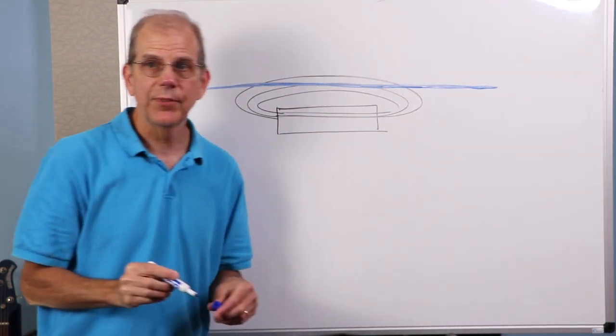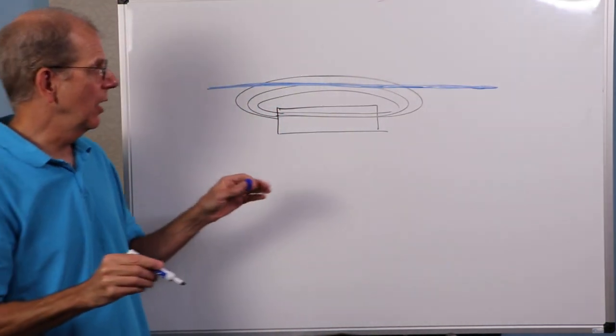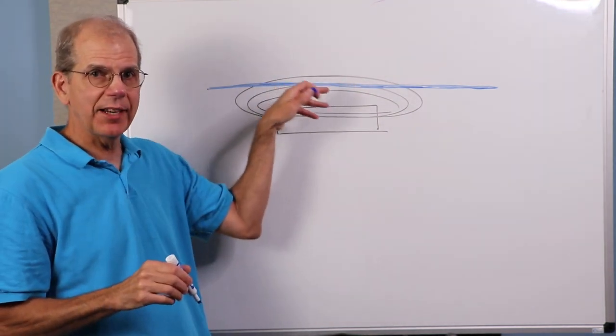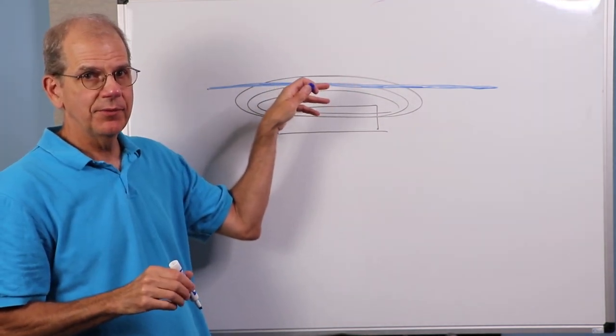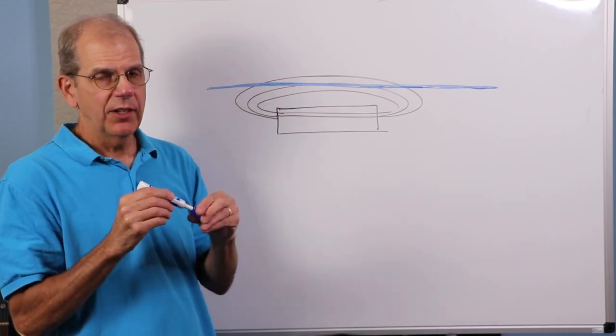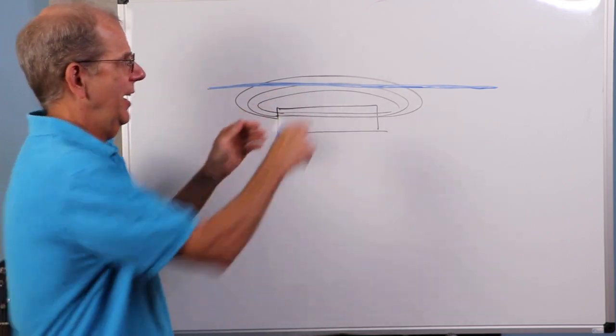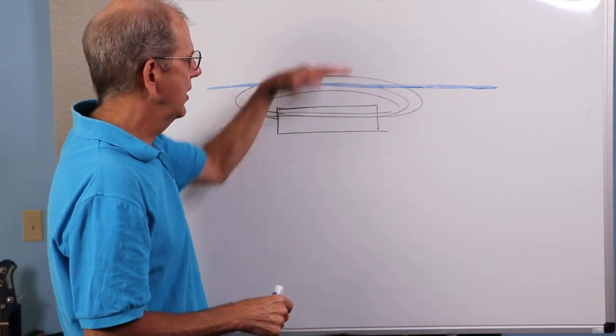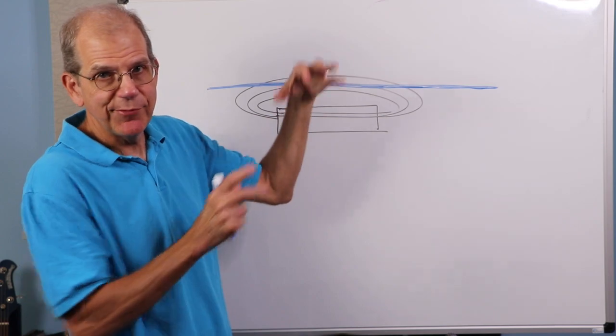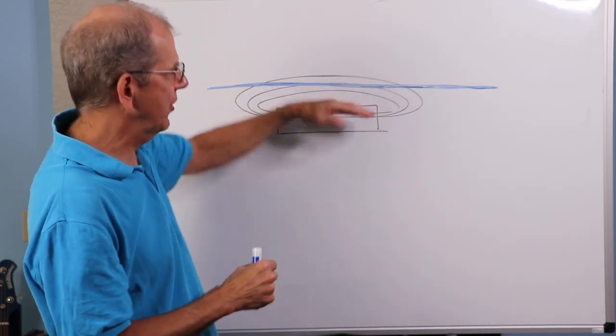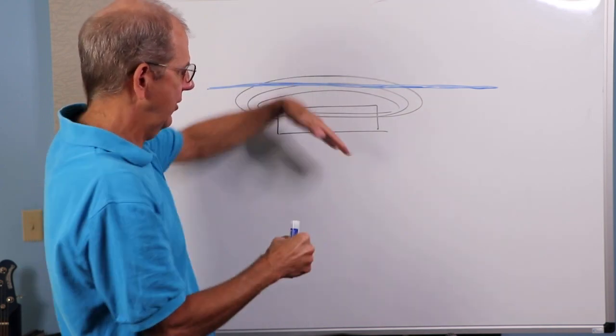And guess what? These are metallic strings. And they will, when you pluck them, when they vibrate, they will distort this magnetic field. What does that do? Well, as I pluck the string, it moves up, it moves down. Think of this like that chunk of iron I drew initially. That distorts this magnetic field, the black lines. They move.